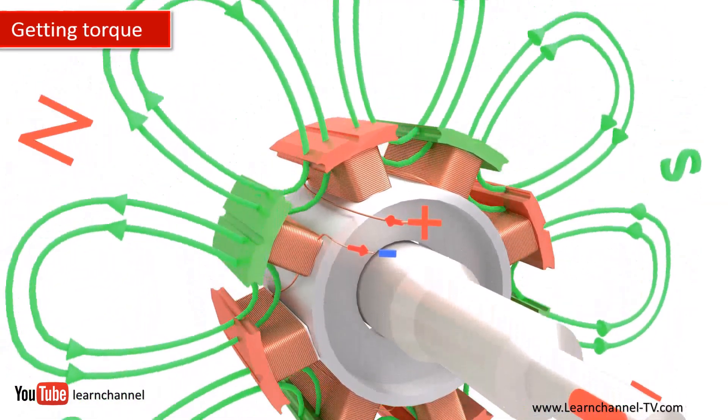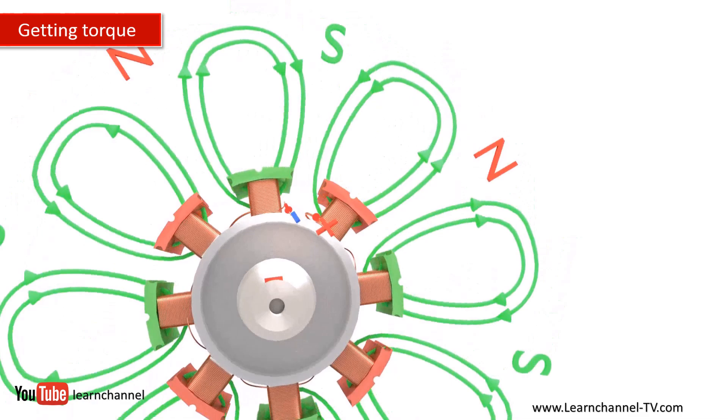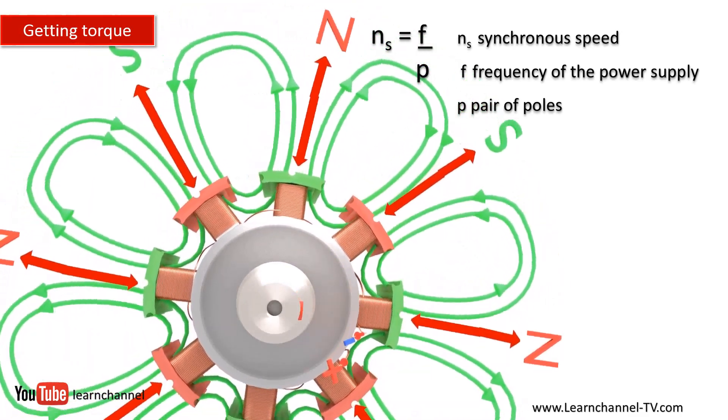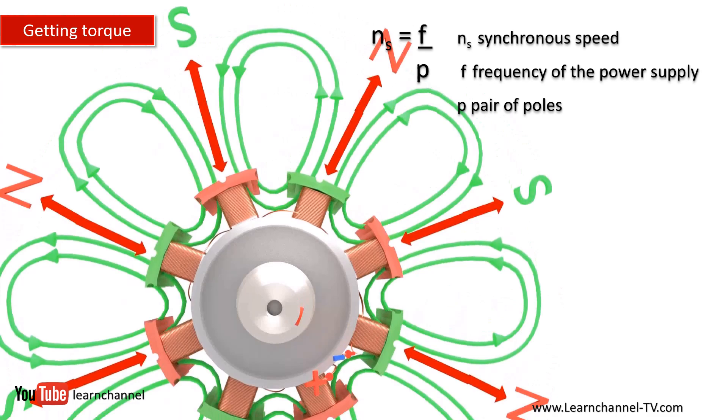Assume the rotor has initial rotation in the same direction as the RMF. The positive poles of the RMF and the rotor attract each other and get locked magnetically.